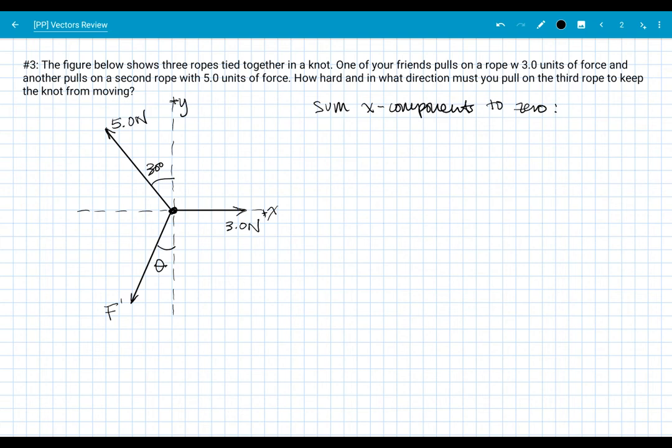So we can start by summing our x components to zero. In the x, I have this three newtons here. That's all in positive x. My x components are going to be that three newtons minus this force over here, which has an x component that points to the left or in the negative x direction. So that's going to contribute negatively to the x components. That's going to be five newtons times sine of 30, kind of like what we did in the previous problem, minus whatever the x component of F prime is. I'm just going to call that F prime sub x. When I add those together, I need to get zero. That's my condition, my constraint. So that's summing the x components to zero, and I'll call that equation one.